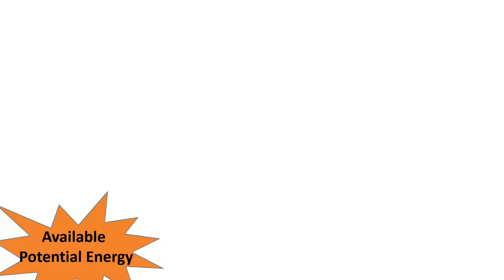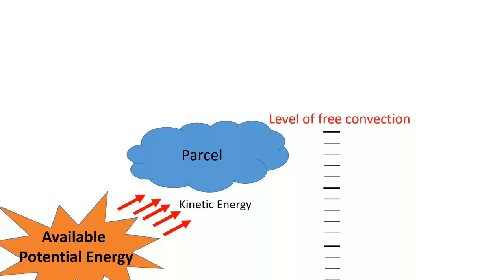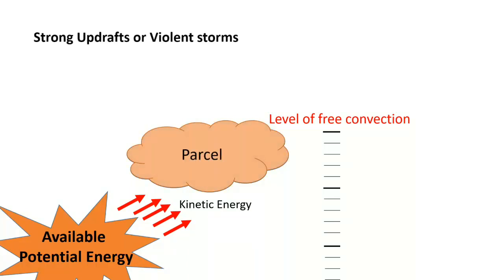The available potential energy is used to lift a parcel. The available potential energy is converted into kinetic energy, and the parcel is lifted up to the level of free convection. The parcel then becomes warmer than the environment, and depending on the amount of available potential energy, strong updrafts or storms form.